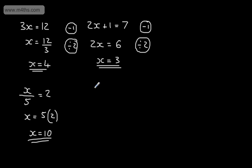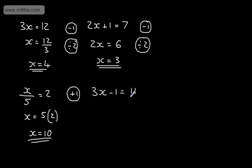Let's look at another one: 3x minus 1 is equal to 11. This time I've got minus 1, so I'm going to do the inverse and add 1 to both sides. We're always doing the opposite: if we've got an add, we subtract; if we've got a subtract, we add; if we've got a multiply, we divide; if we've got a divide, we multiply.